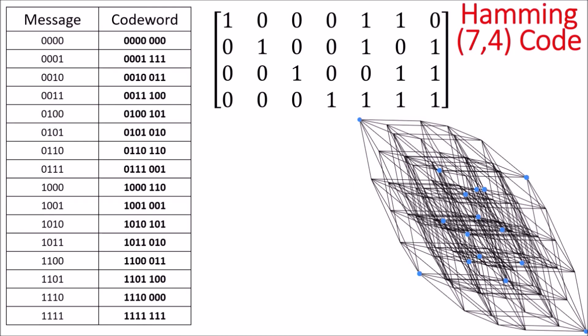In the case of the Hamming 7-4 code there are enough code words that comparing all possible pairs is very tedious. Thankfully it turns out there's a better way to determine what the minimum distance is.